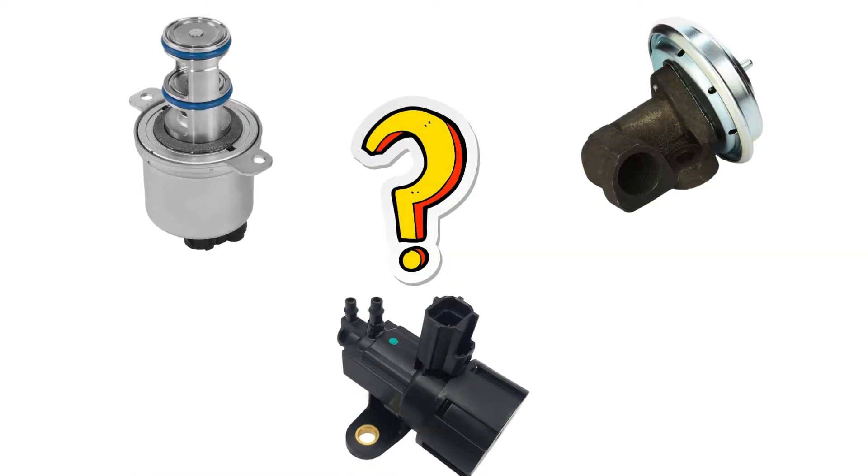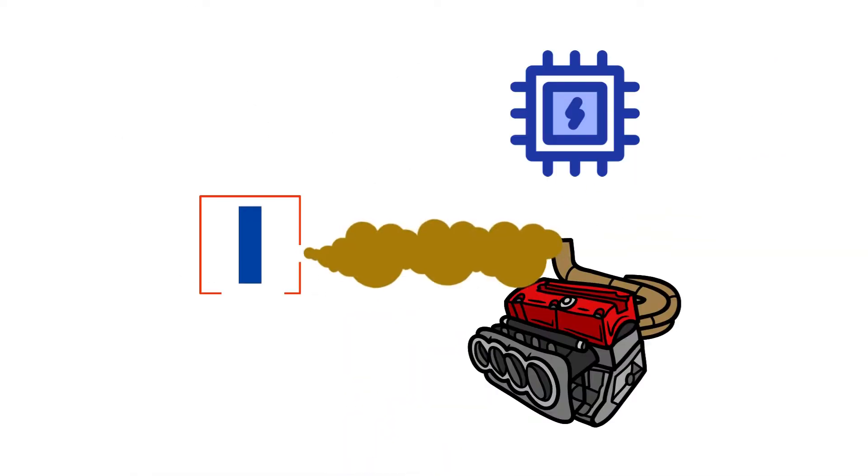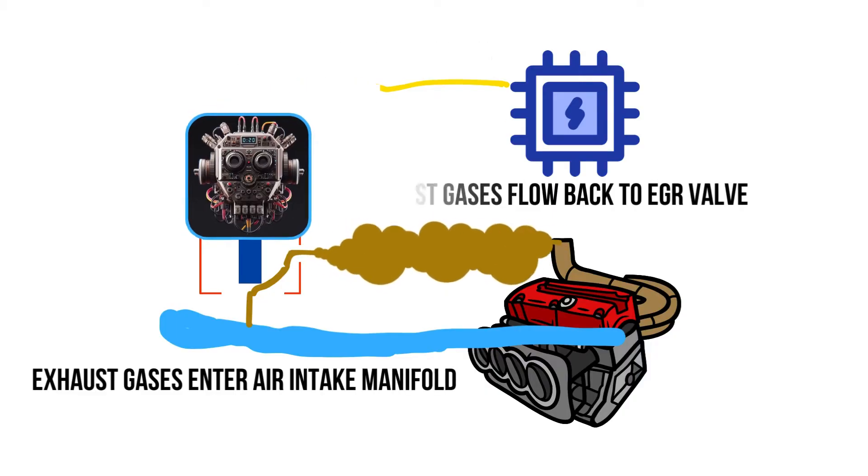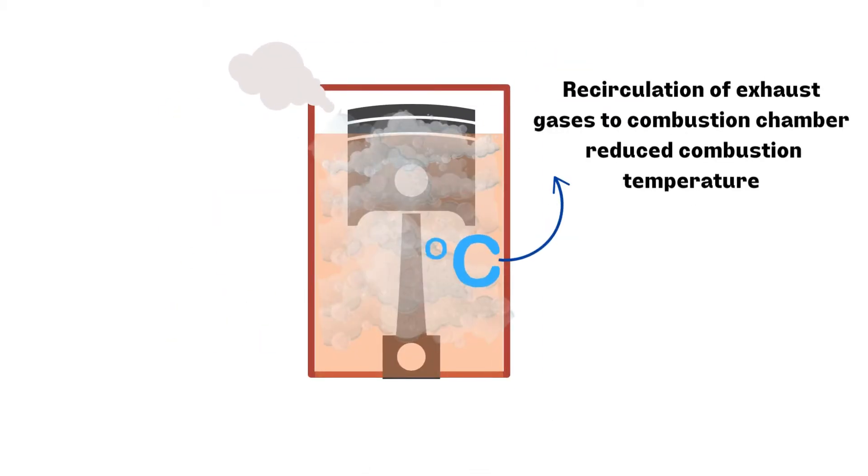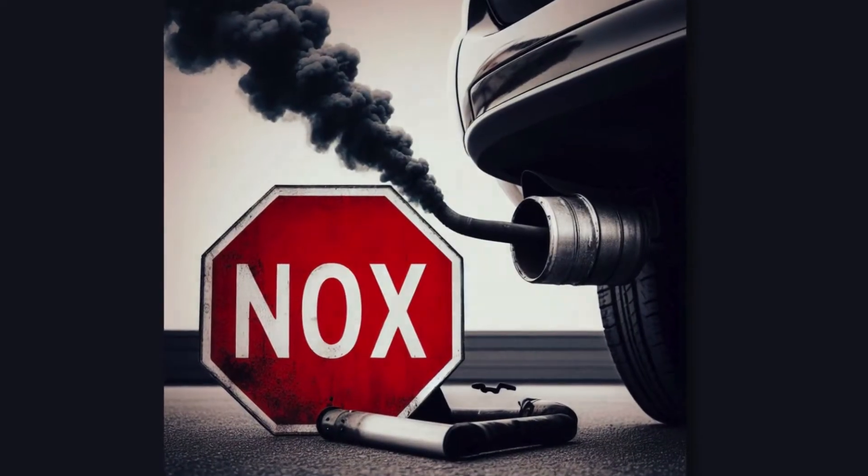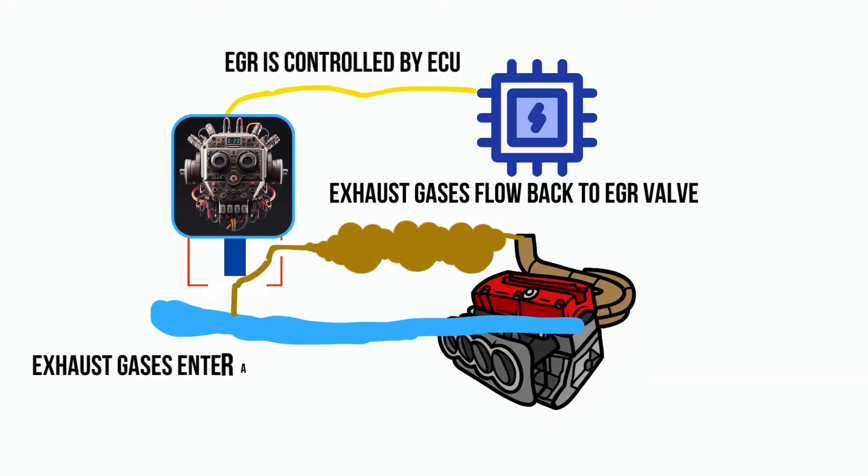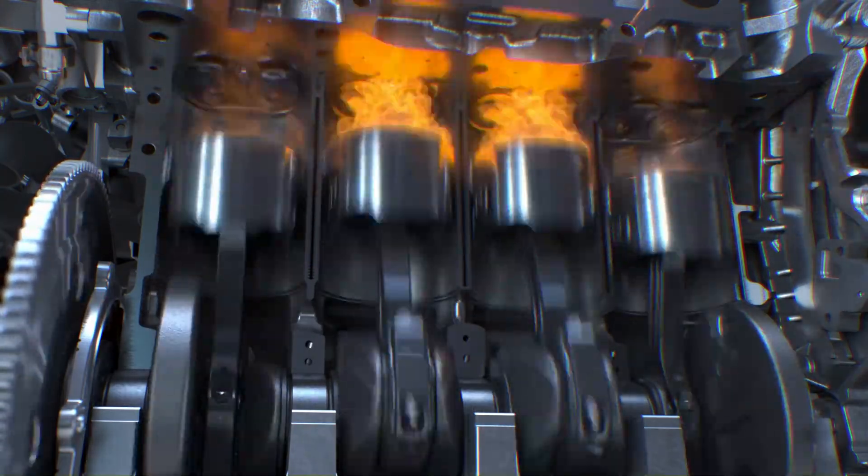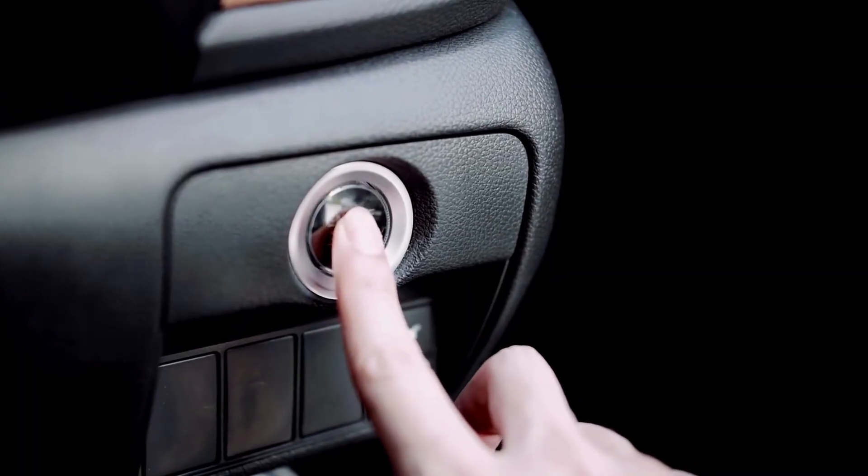EGR stands for exhaust gas recirculation. It's a valve that routes a portion of the engine's exhaust back into the intake and combustion system. By adding some inert exhaust, it lowers peak combustion temperatures, reducing NOx emissions. The EGR valve is programmed to open and allow exhaust gas recirculation once the engine reaches normal operating temperature. This prevents issues during cold starts.